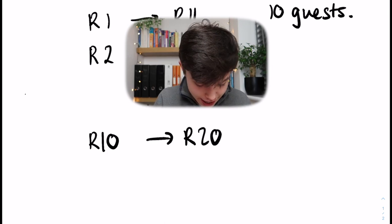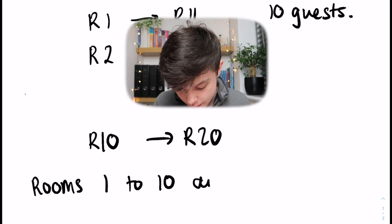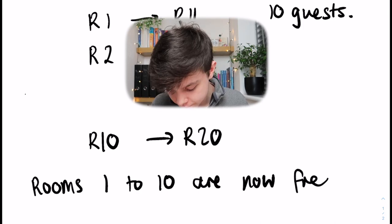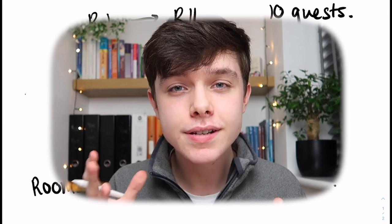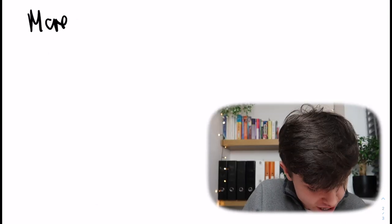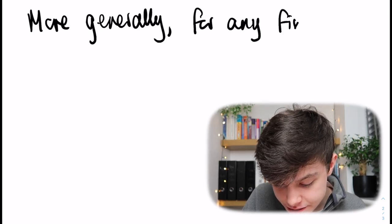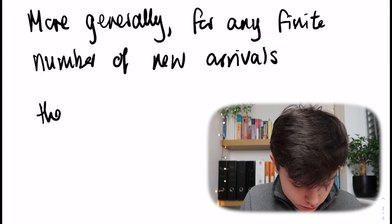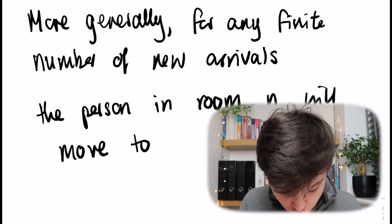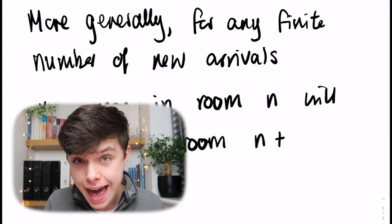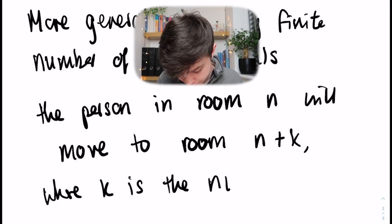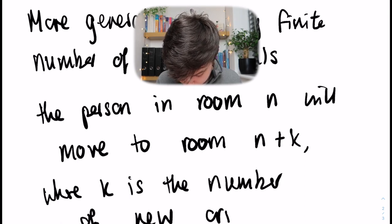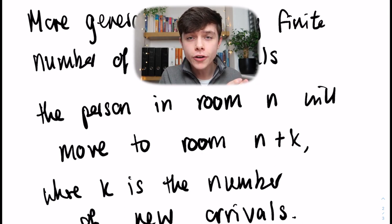The hotel is full from room 11 onwards, which means rooms 1 to 10 are now free, so those 10 new arrivals can go into rooms 1 to 10. More generally, for any finite number of new arrivals, the person in room n will move to room n plus k, where k is the number of new arrivals. That leaves rooms one through k free for the new guests.